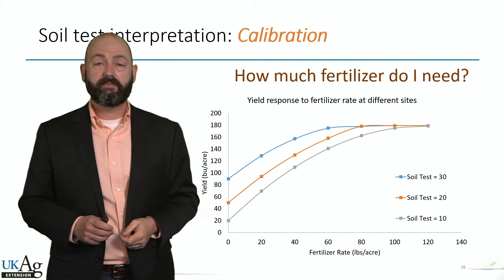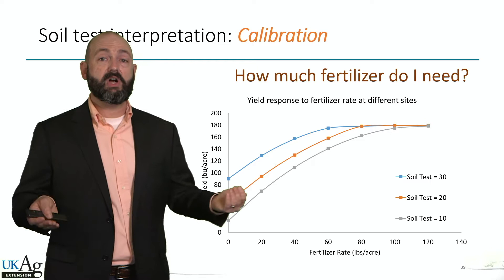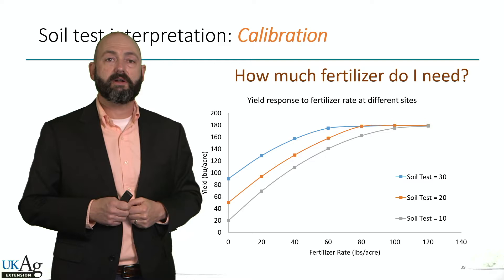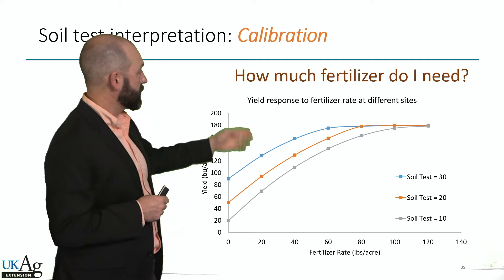One important thing to point out: you can achieve maximum yield even at very low soil test, but you're going to be growing off the fertilizer versus the soil supply of that nutrient. The soil is always supplying a portion of the nutrient regardless of what nutrient we're talking about, and the balance is what we provide from fertilizer based on these recommendations from the calibration step.